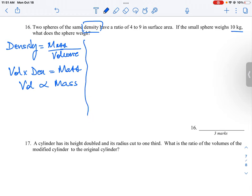What are we given? We have a ratio of 4 to 9 in surface area. So surface area for sphere 1 is 4, and surface area for sphere 2 is 9. We need to think about how to go from surface area to volume.